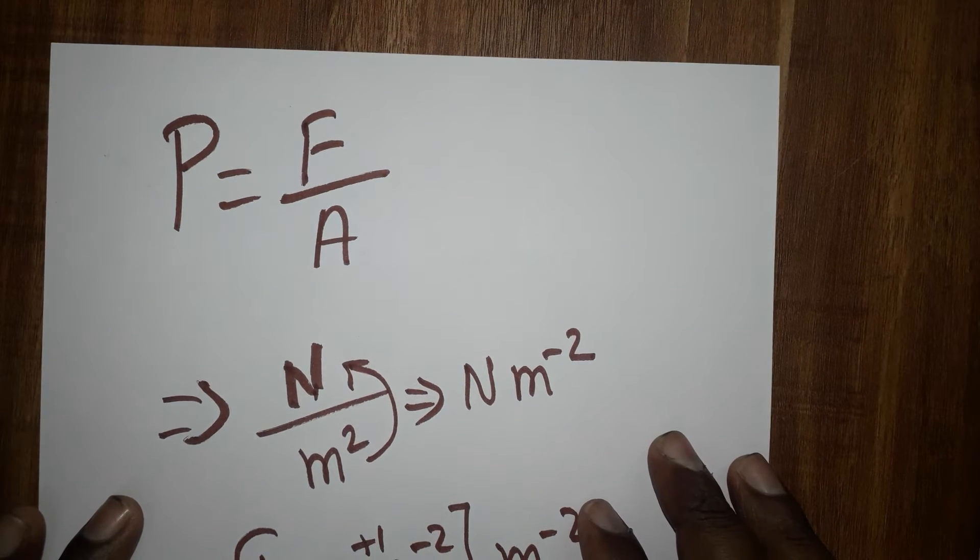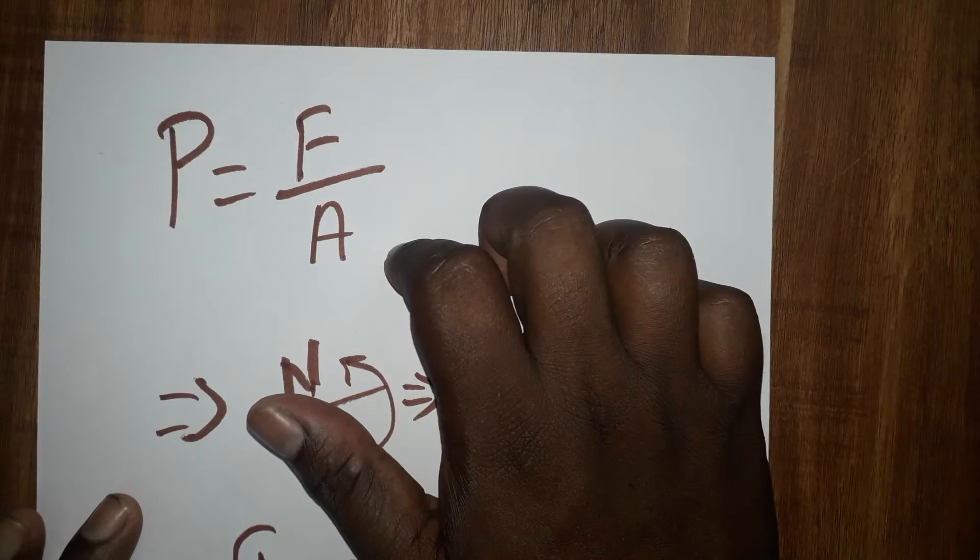Hello student, today we are going to learn what is the SI unit of pressure and the dimensional formula for pressure. Pressure is equal to force per unit area.